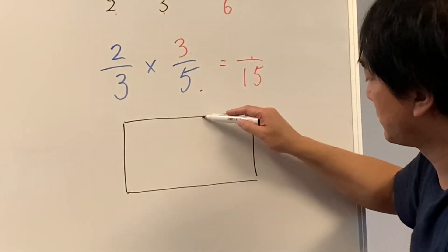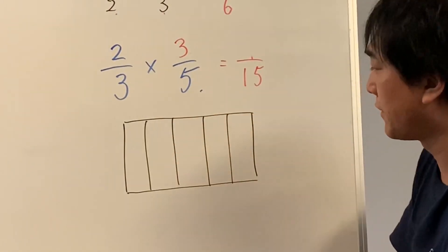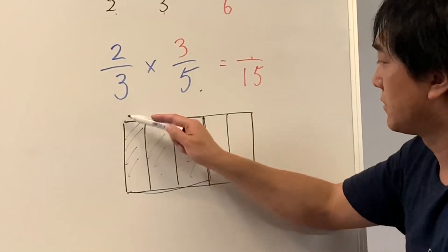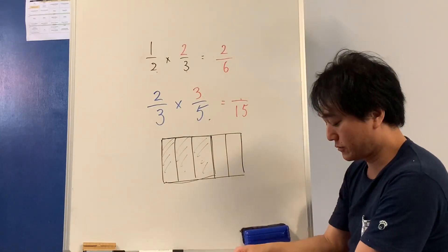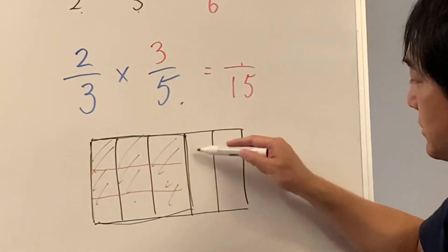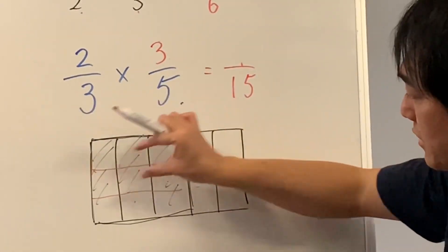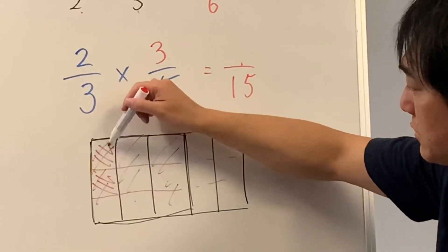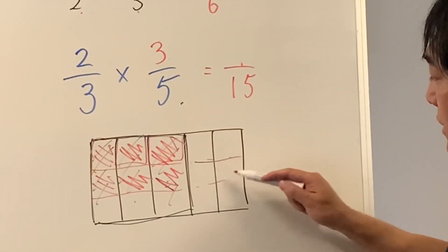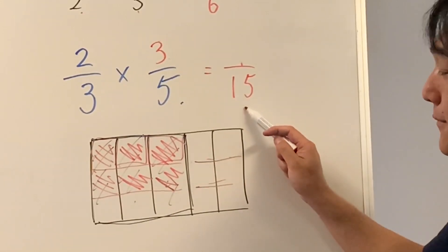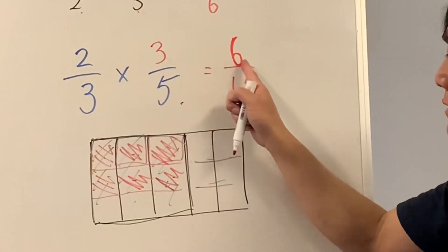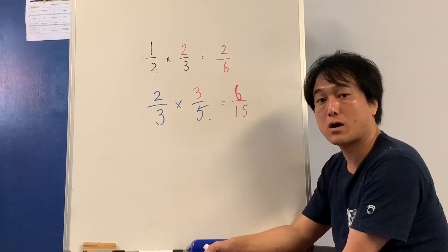I need to find three-fifths, taking three of the five equal pieces. And I need two-thirds of those, so I cut it into three equal pieces and take two lots. I now have 15 little pieces — same as last time — but I'm taking six. Two plus three is not six, but two times three is six.